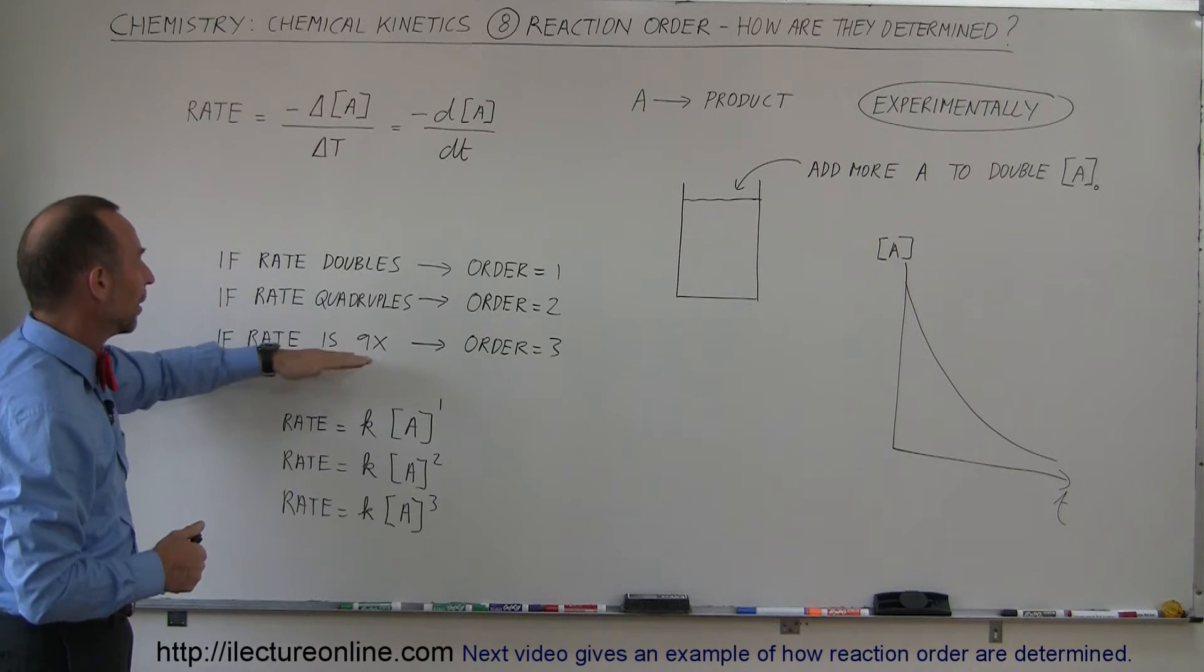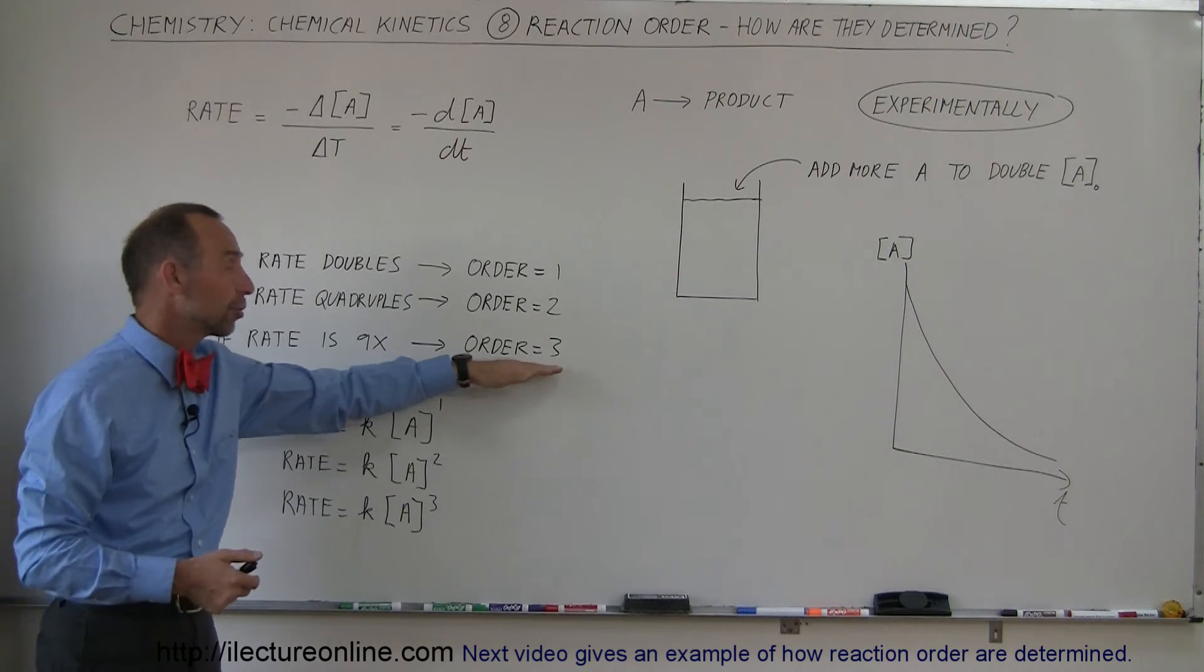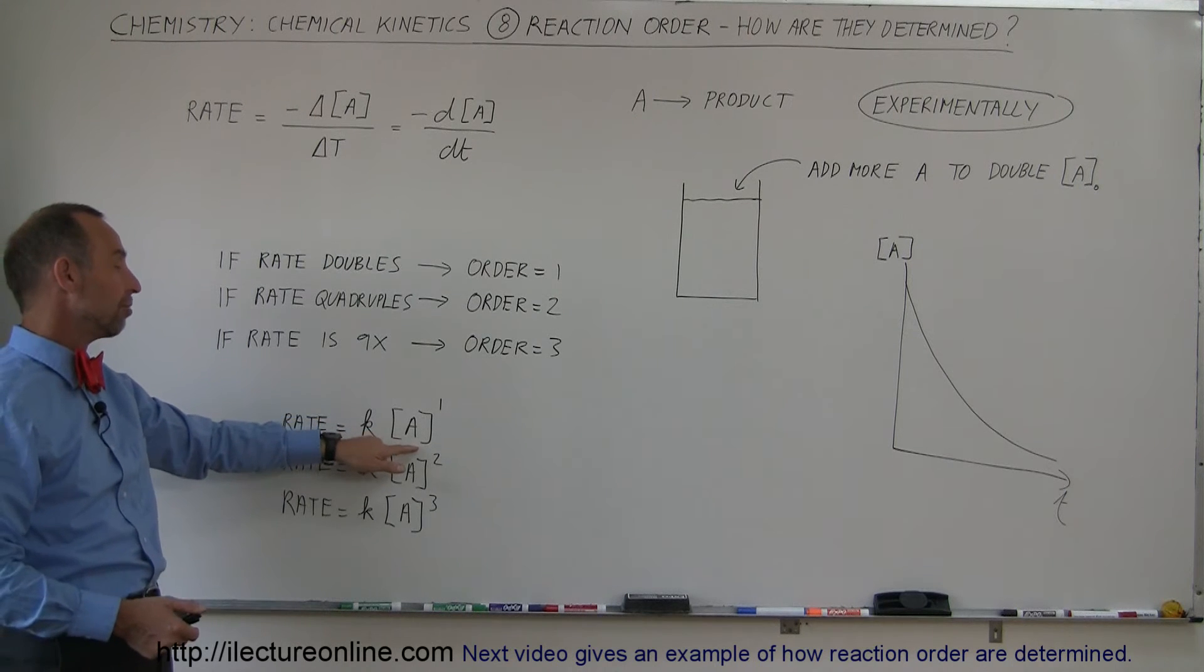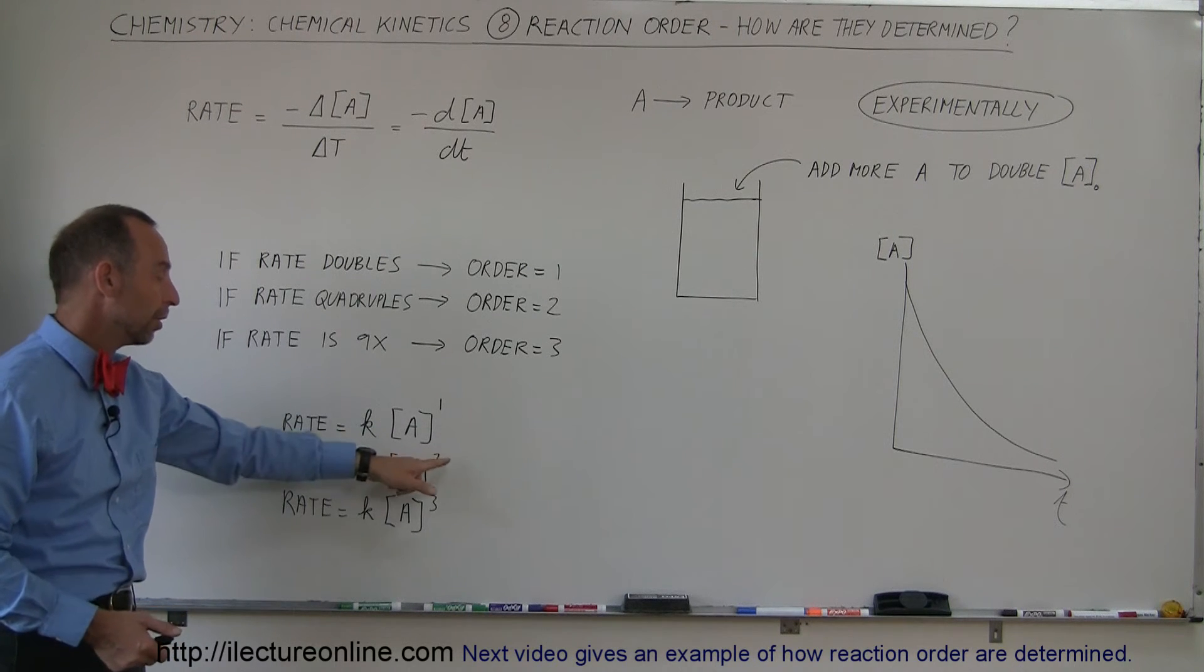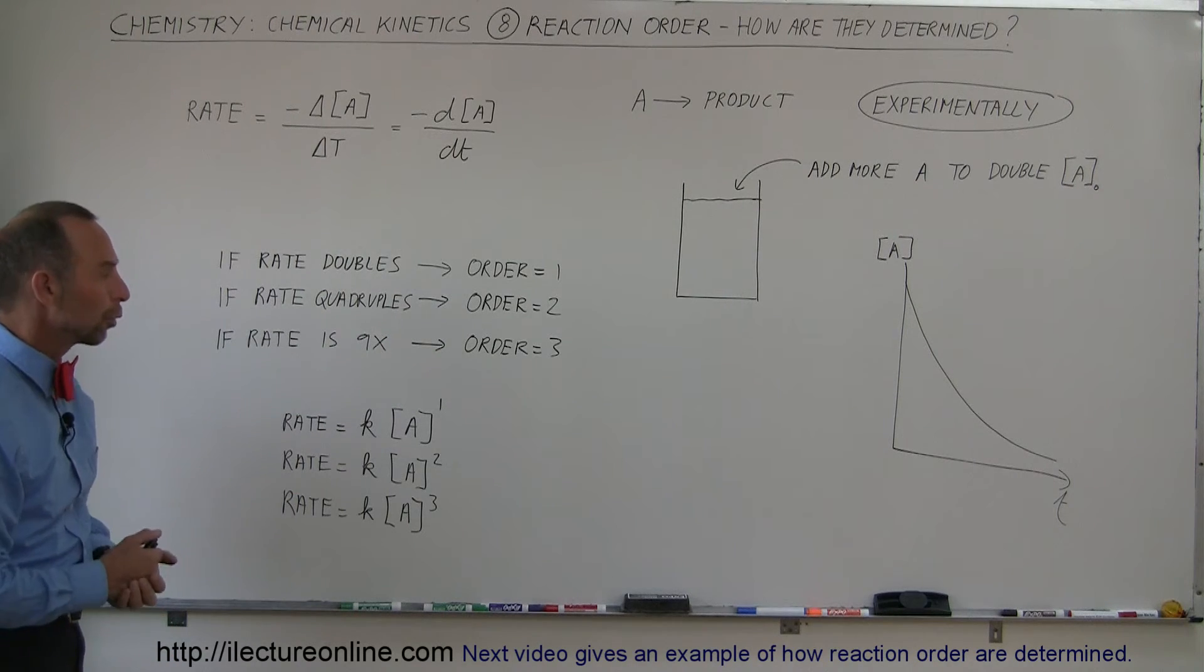If we find that the rate is nine times as fast when we double the concentration, then we know the order is three. We can write this as: rate equals the constant k times the concentration of the reactant to the first power, second power, or third power, corresponding to order one, two, or three.